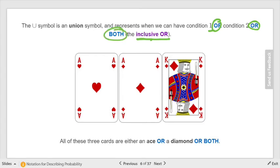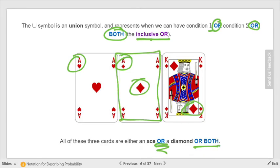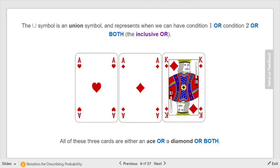It can be one condition or condition two, or it can be both. In this case, all of these cards are either an ace—two aces—or a diamond. Both of these are diamonds. Or both: this one is both an ace and a diamond at the same time. In your notes, you need to write that the U symbol, the union, is the union symbol and represents when you have the word or.